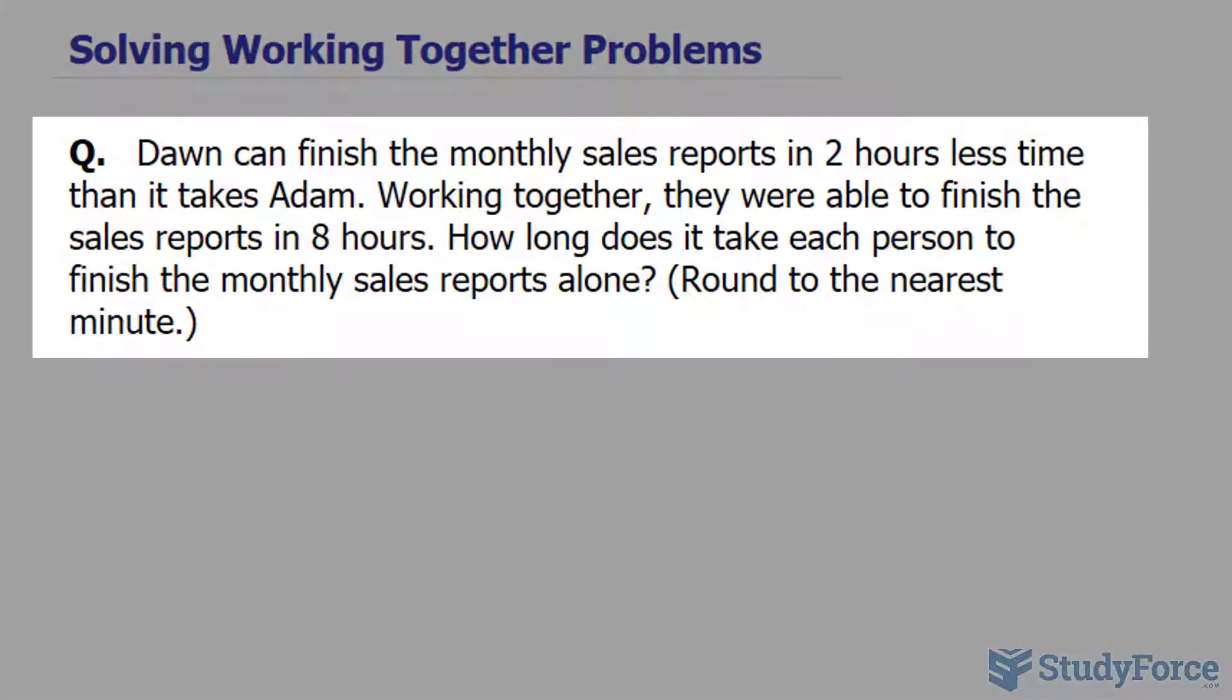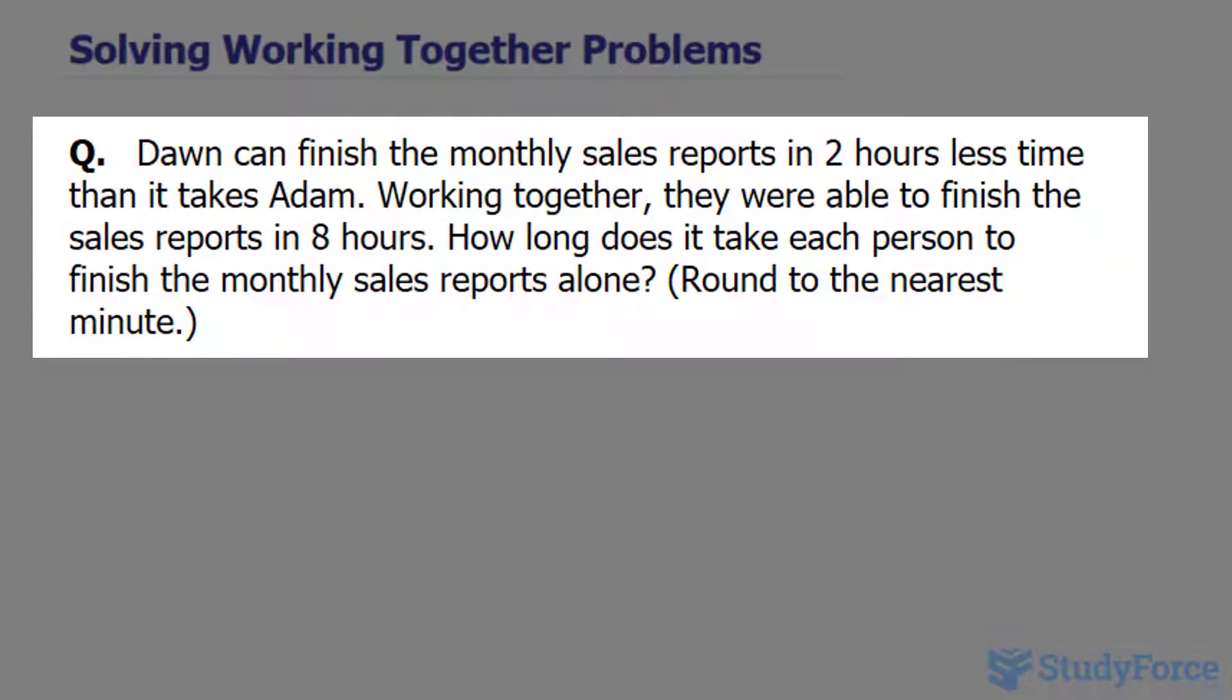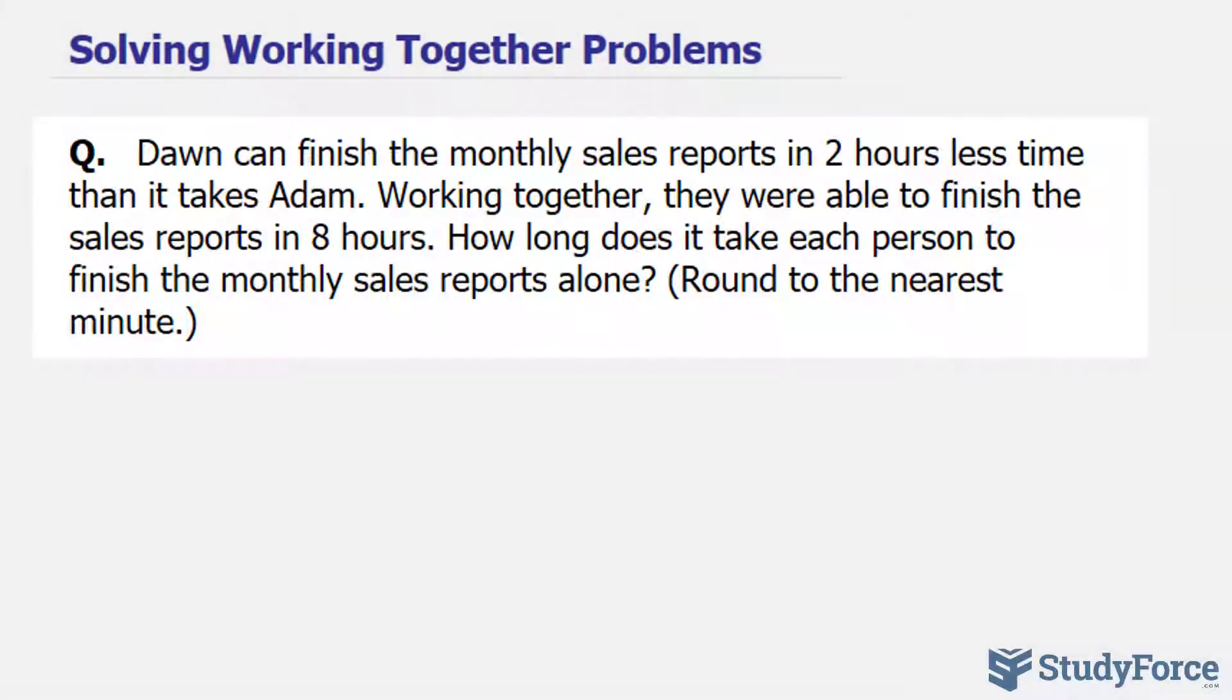The question reads: Dawn can finish the monthly sales report in two hours less time than it takes Adam. Working together, they were able to finish the sales reports in eight hours. How long does it take each person to finish the monthly sales report alone? And we're expected to round to the nearest minute.